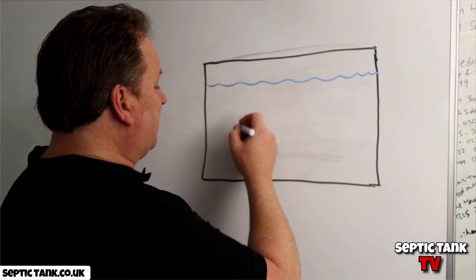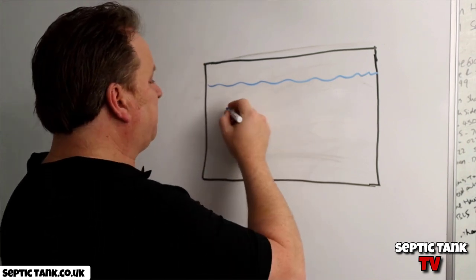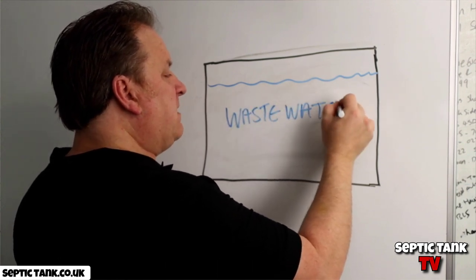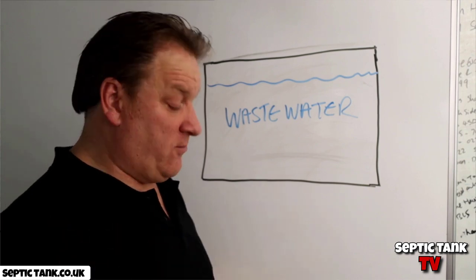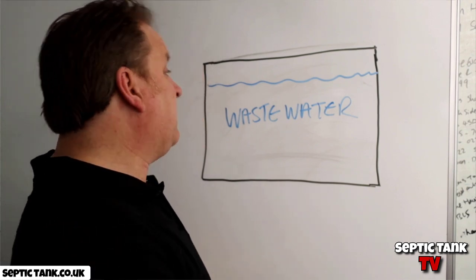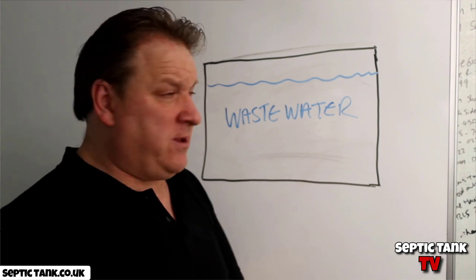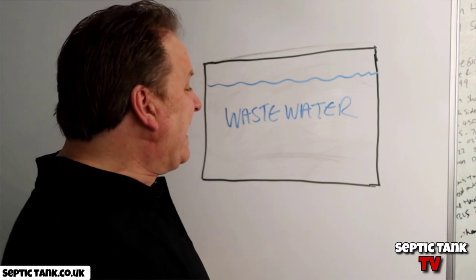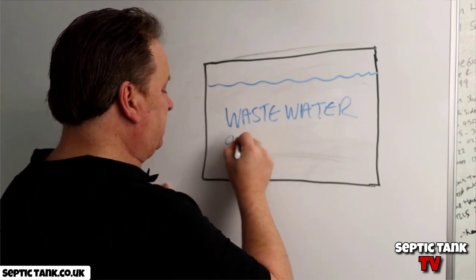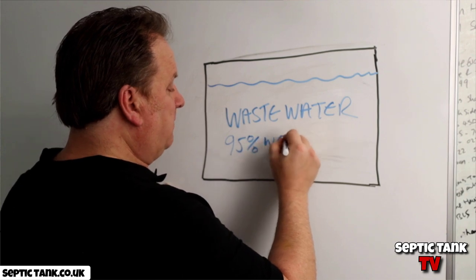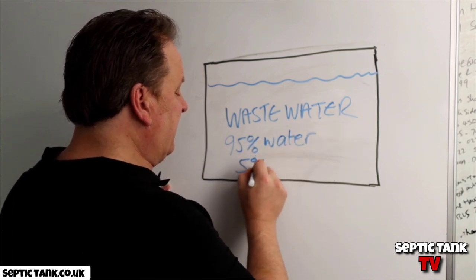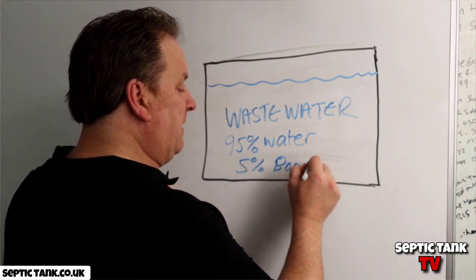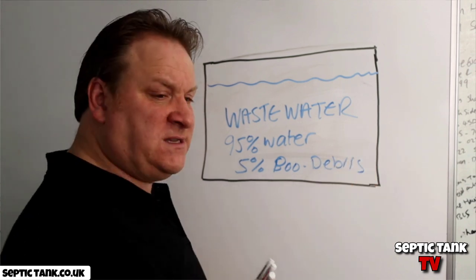What do we mean about septic tank leaks? Basically, the septic tank is full of something called wastewater. Although it looks blue in the diagram, in reality it's brown, because inside you've got waste and other debris. The wastewater is probably about 90 to 95 percent water — the other five percent is waste and other debris.